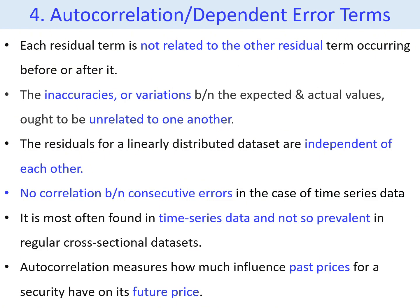The fourth assumption test concerns autocorrelation, or dependent error terms. This test expects that each residual term is not related to the residual term that comes before or after it — in other words, there should be no correlation between consecutive errors. The differences between expected and actual values should be independent of each other. In a linearly distributed dataset, the residuals should not influence one another. Autocorrelation is most often found in time series data and not prevalent in regular cross-sectional datasets. As a practical example, autocorrelation measures how much influence past fuel prices have on future fuel prices.